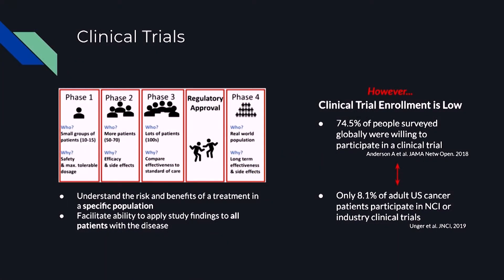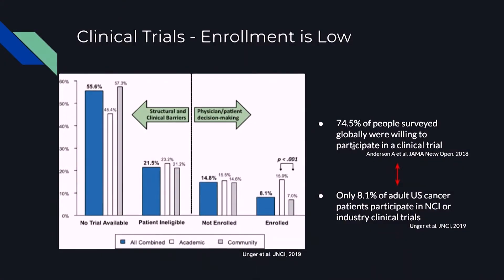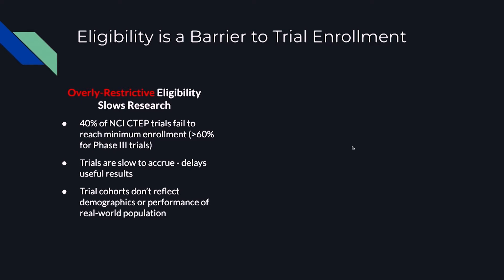However, there is a problem: clinical trial enrollment is always pretty low. There was a survey for cancer patients where around 75% of people said they are willing to participate in clinical trials. But in reality, statistics show that only around 8% of adult U.S. cancer patients can participate in those clinical trials. Most patients are not eligible for clinical trials because those trials usually have pretty strict criteria for enrollment, and eligibility is a clear barrier to trial enrollment.